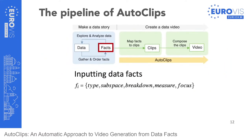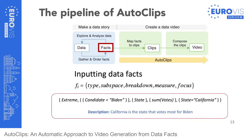The input of AutoClips is a sequence of data facts. A data fact can be represented as a five-tuple structure including fact type, subspace, breakdown, measure, and focus. Fact type indicates the category of information. Subspace defines the data scope. Breakdown divides the subspace into groups. Measure calculates each group's numerical value. Focus highlights the data item to pay attention to. For example, 'California is the state that votes most for Biden' is a data fact whose fact type is extreme, using Biden votes as subspace, number of votes as measure, US states as breakdown, and California as focus.